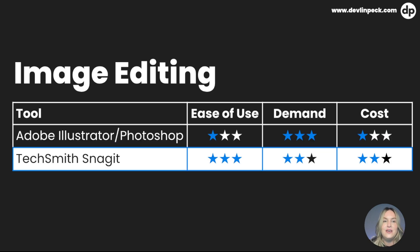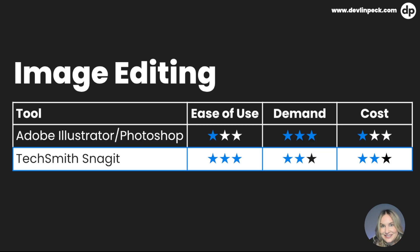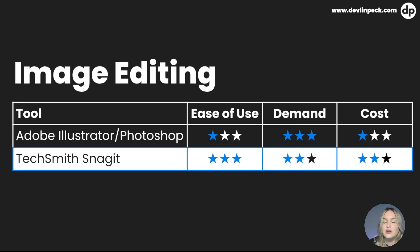Our next image editing tool is TechSmith Snagit. TechSmith Snagit is much easier to use than Photoshop and Illustrator. It's neutral in demand — you don't see it on a ton of job descriptions, but many companies use it. As far as cost goes, it's neutral — not free, but not super expensive. It can also be included with two other TechSmith products we'll mention, so you can either purchase them separately or in a package deal.